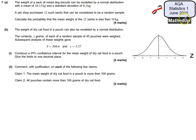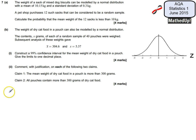This is question number 7 from the AQA Statistics 1 June 2015 exam paper. For part A, we are told that the weight of a sack of mixed dog biscuits can be modelled by a normal distribution with a mean of 10.15kg and a standard deviation of 0.3kg. A pet shop purchases 12 such sacks, considered a random sample, and we need to calculate the probability that the mean weight of the 12 sacks is less than 10kg.